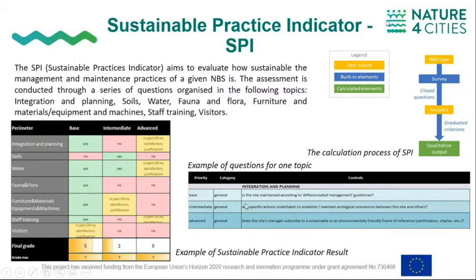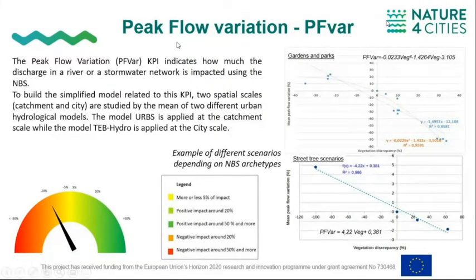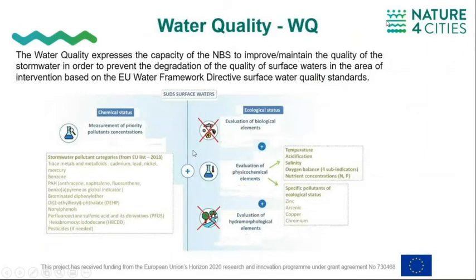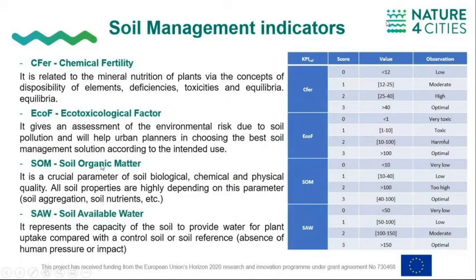There are five categories in which you have to answer the questions. For the bio-flow variation, you only have to add the vegetation coverage of the area so it can calculate how the rainfall will interact with the urban environment. In this KPI, four kinds of scenarios can be differentiated. For water quality, it is based on the EU Water Framework Directive and focuses on swales and green roof types of NBS — we do not take into consideration biological or geomorphological elements. For the last one, we have four soil indicators for which the categories of results can be seen, and it gives back a scale bar as a result.